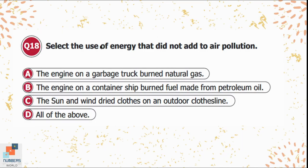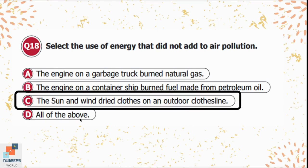Question 18: Select the use of energy that did not add to air pollution. Option A: a garbage truck engine burnt natural gas. Option B: a container ship engine burnt fuel made from petroleum oil. Option C: the sun and wind dried clothes on an outdoor clothesline. Option D: all of the above. Option C is the only correct answer, as it uses natural energy sources without burning fuel.